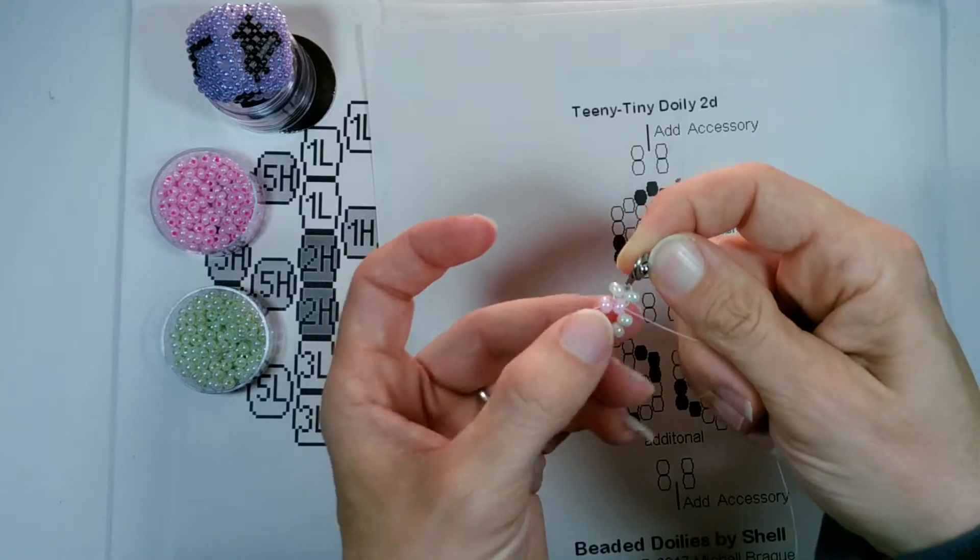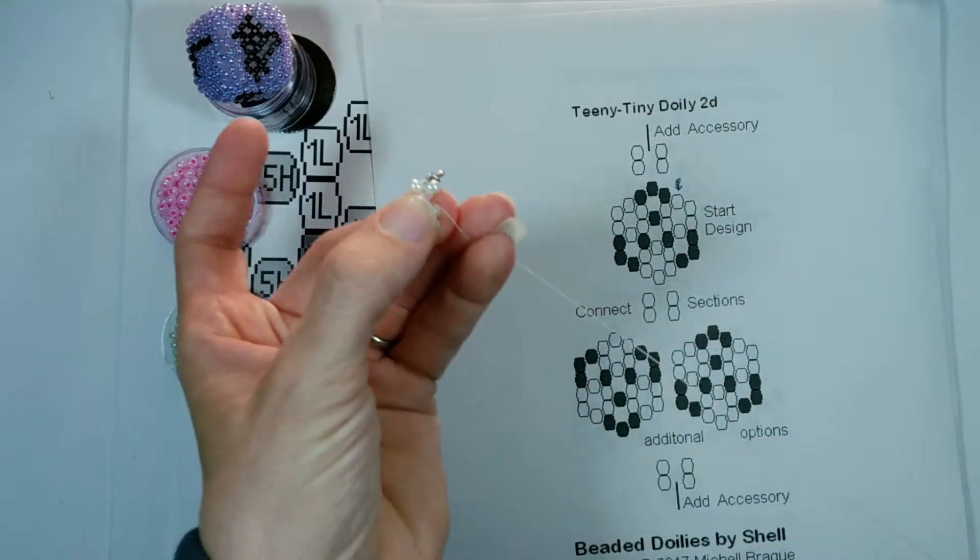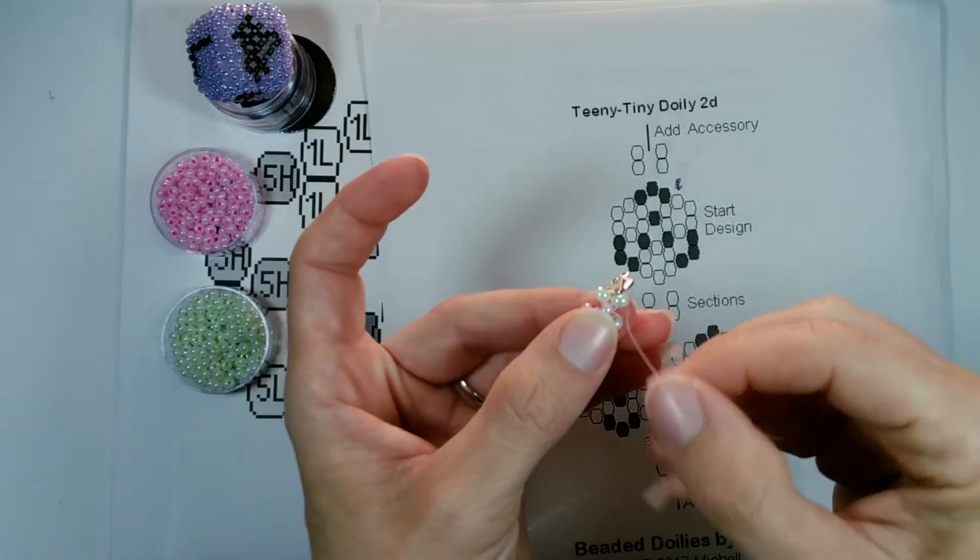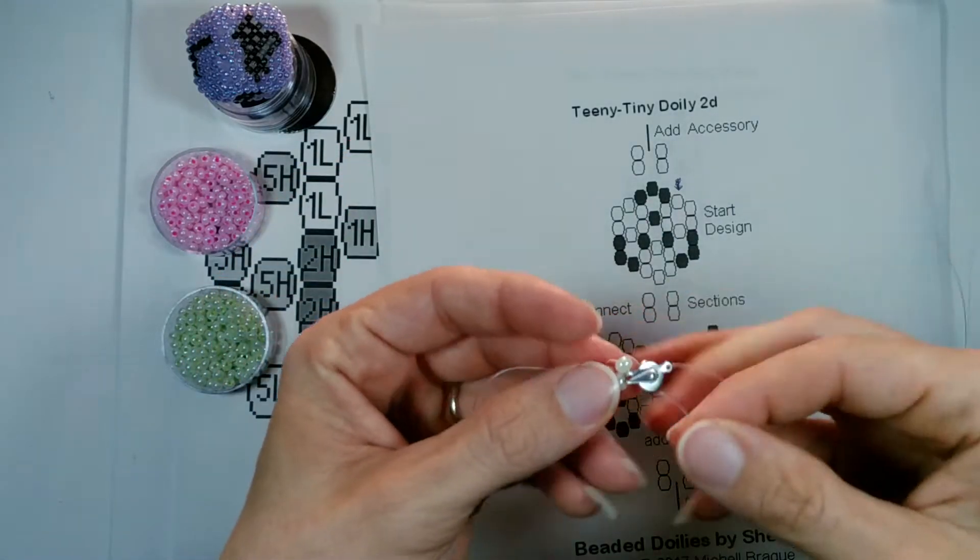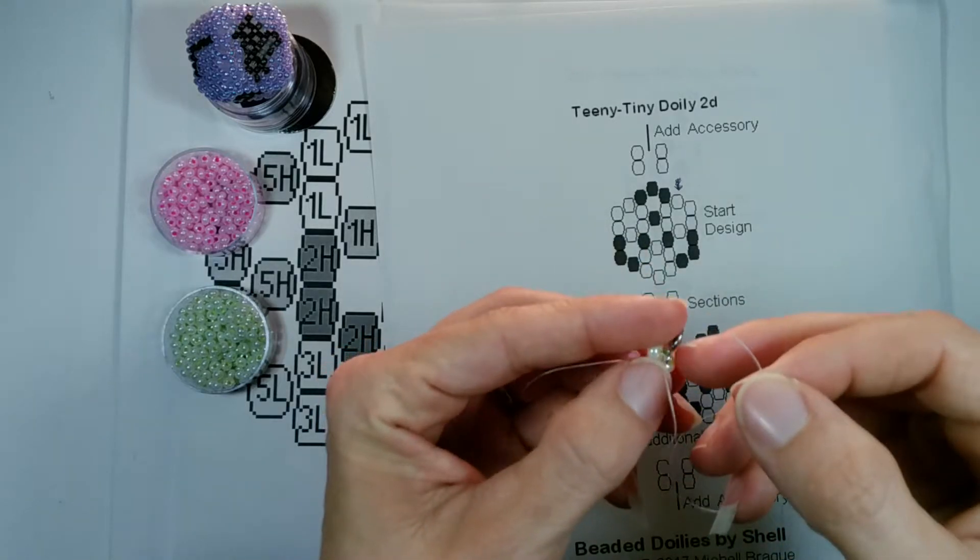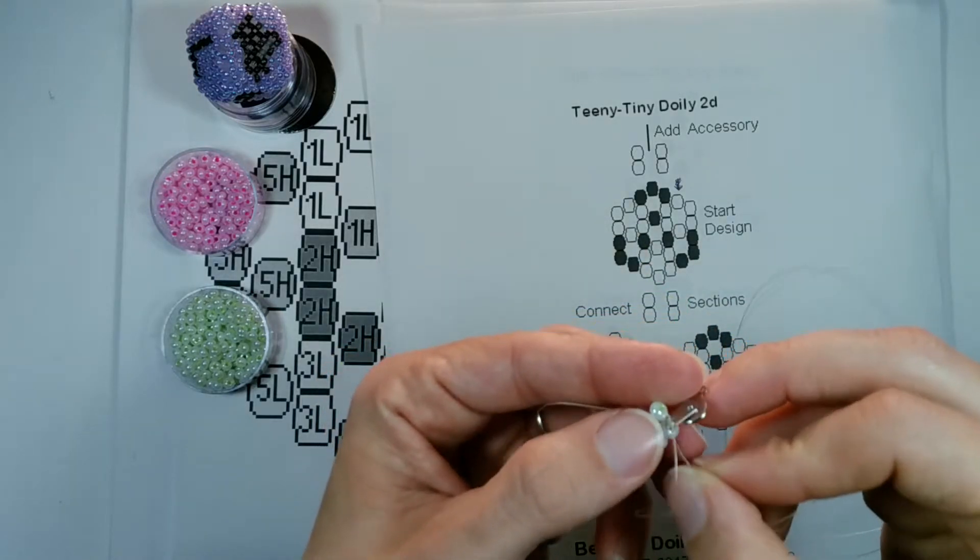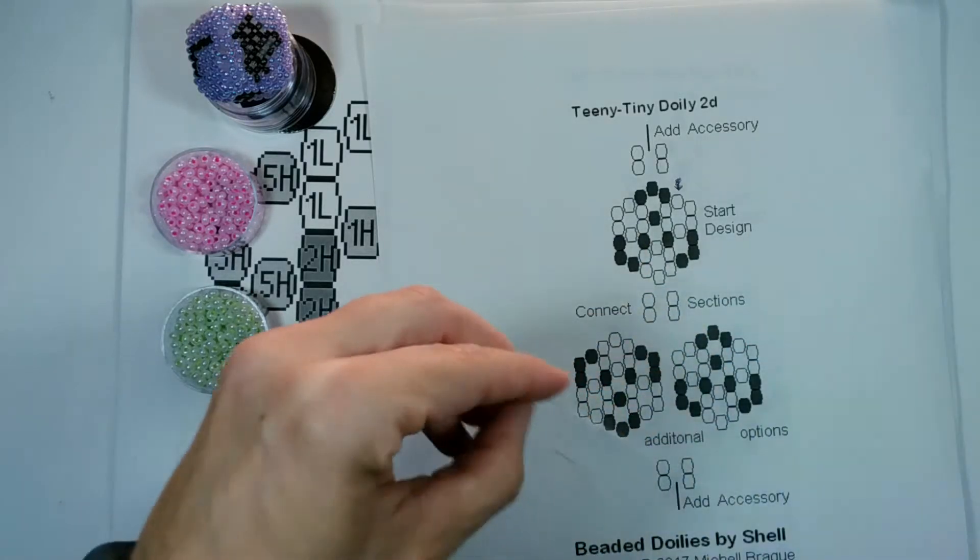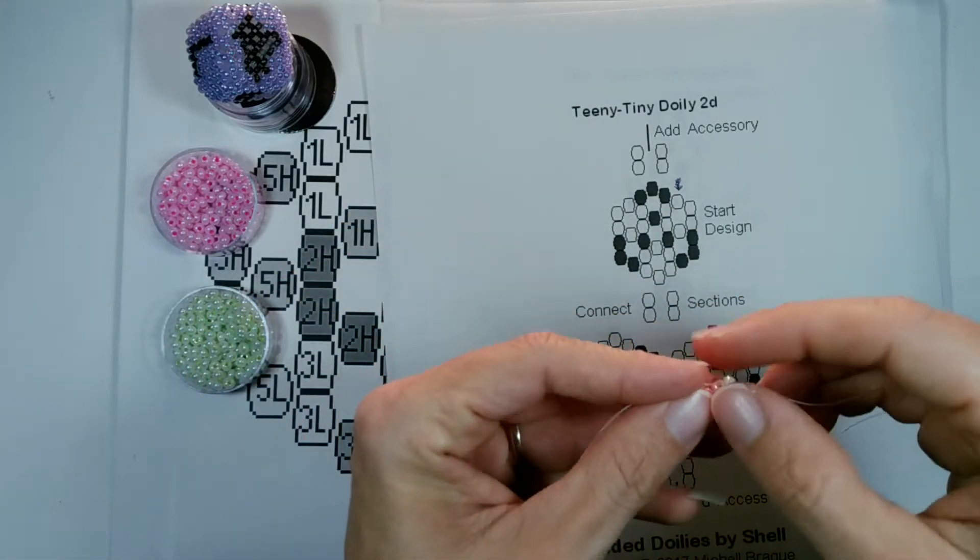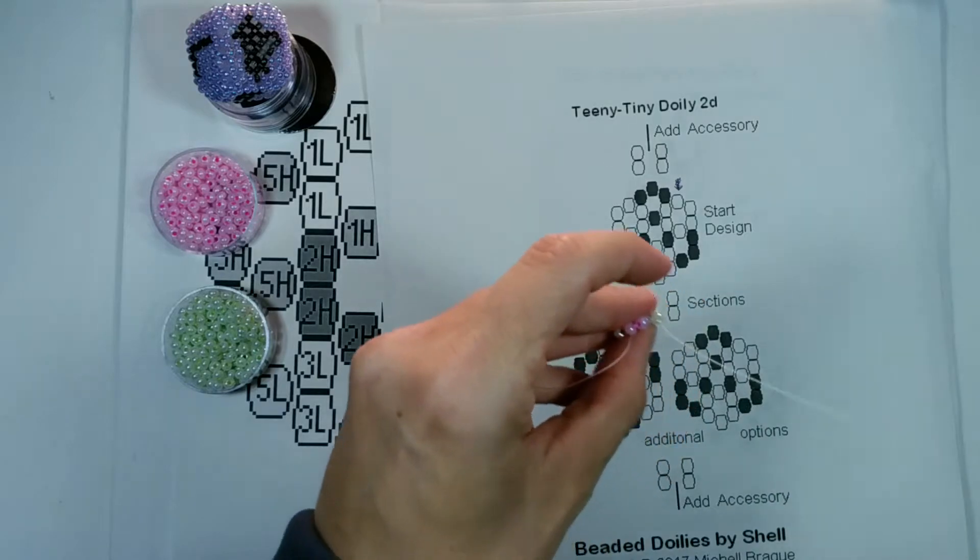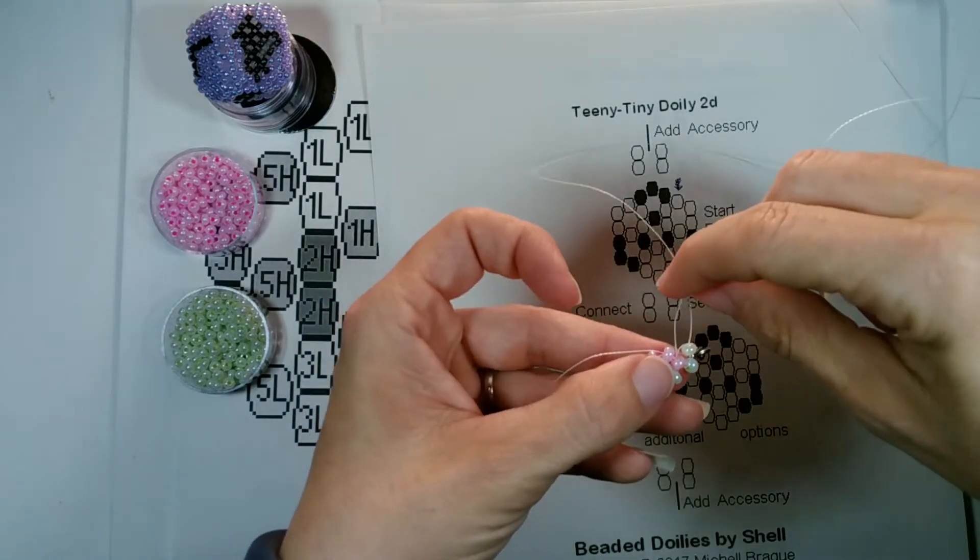Now one thing I would recommend is that you go back through this circle, follow the path all the way around: first connection bead, then your accessory, then this second connection bead, and back through the top bead again. Just follow the circle all the way around the same as the first time.